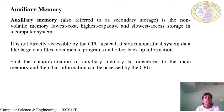It is used to store large amounts of data and is the slowest access storage — it cannot be accessed very fast. It is not directly accessible by the CPU. Instead, it stores non-critical system data like large data files, documents, programs, and other backup information. First the data from auxiliary memory is transferred to main memory, and then it can be accessed by the CPU.